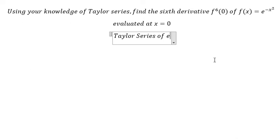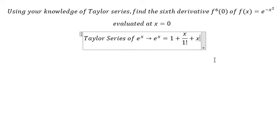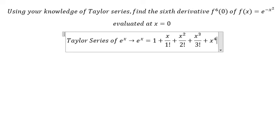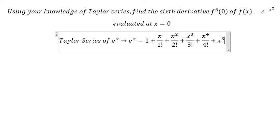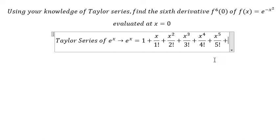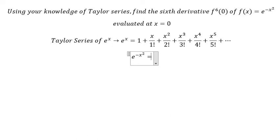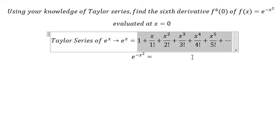We start with the Taylor series of e to the power of x. Now for this problem we have e to the power of negative x squared, so we change x into negative x squared for this Taylor series.